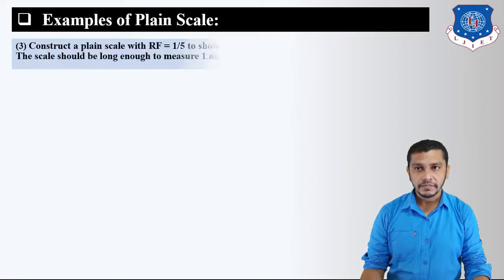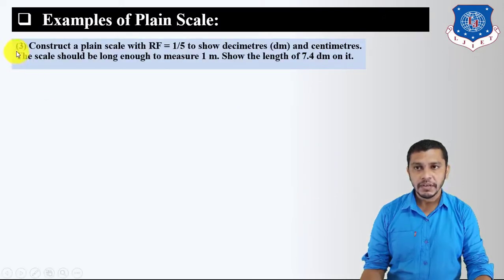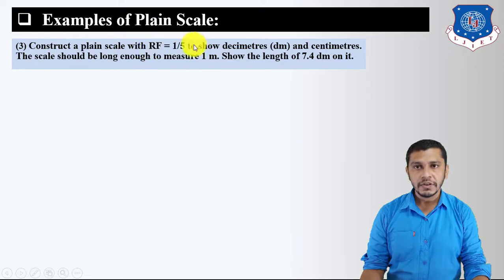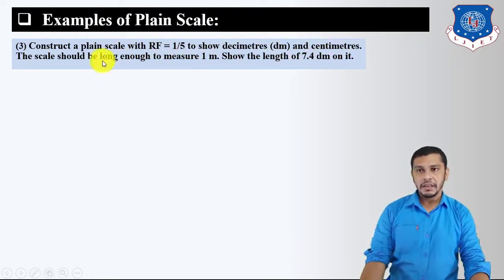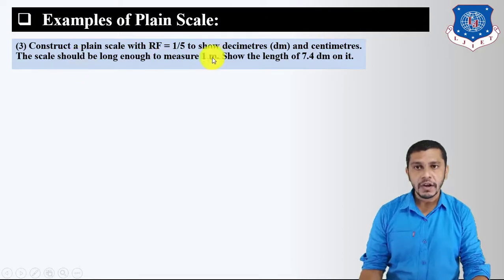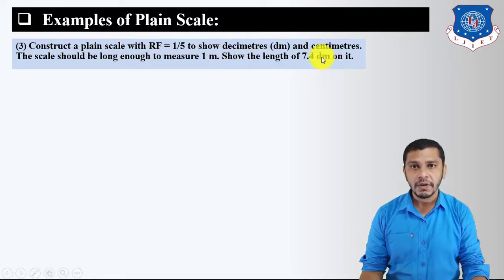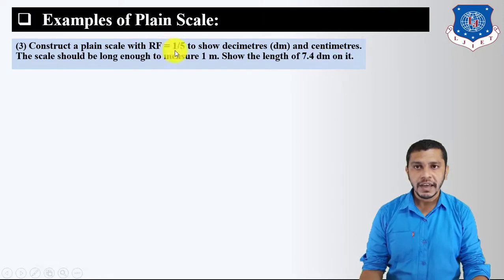Example 3: Construct a plane scale with RF = 1:5 to show decimeters and centimeters. The scale should be long enough to measure 1 meter. Show a length of 7.4 decimeters on it.